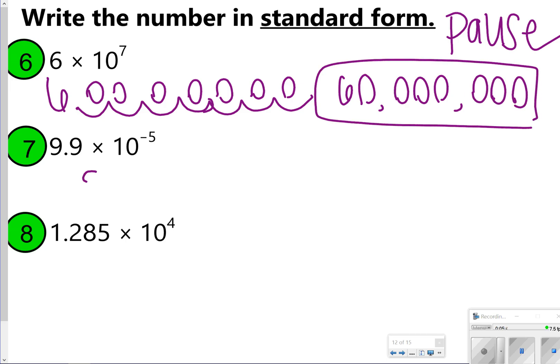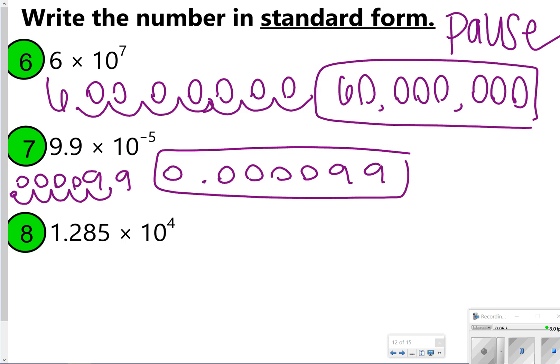Number 7, we're starting with 9.9 and moving it 5 to the left. 1, 2, 3, 4, 5. That's going to give us .000099. The last one in number 8, we're taking the whole entire decimal, 1.285, and moving it 4 times to the right. 1, 2, 3, 4. That one only had one zero added onto it, so my answer for number 8 is 12,850.